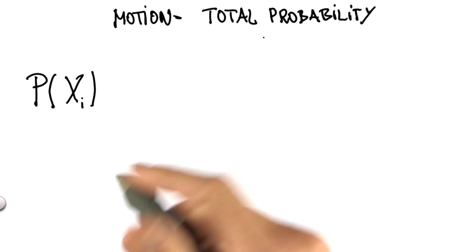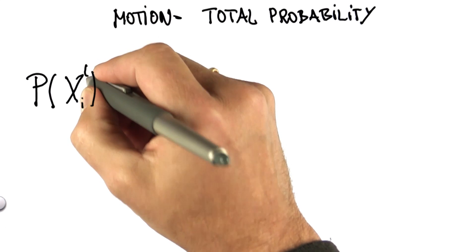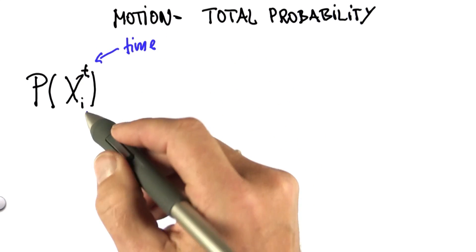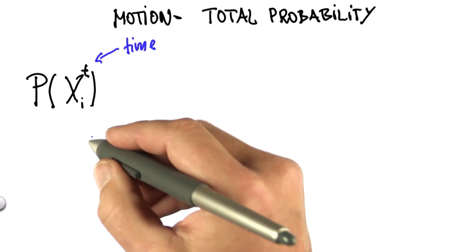Now to indicate the after and before, let me add a time index. So t up here is an index for time. And I write it uppercase so there's no confusion with the index i, which is the grid cell.